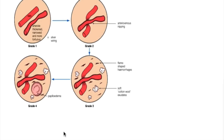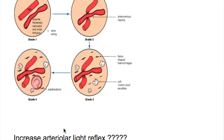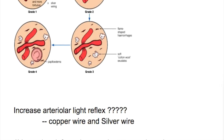What is increased arteriolar light reflex? In hypertensive retinopathy there is copper wiring and silver wiring in the later stages. The AV crossing defect appears in the earlier stages, and then hemorrhages and cotton wool exudates.